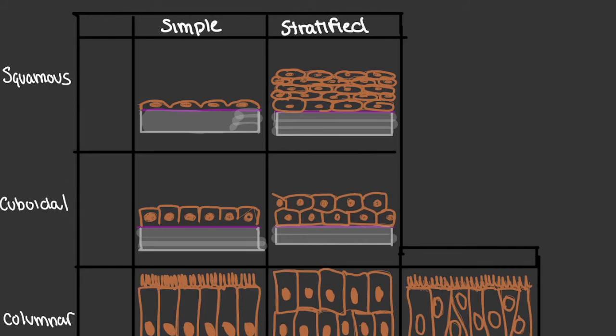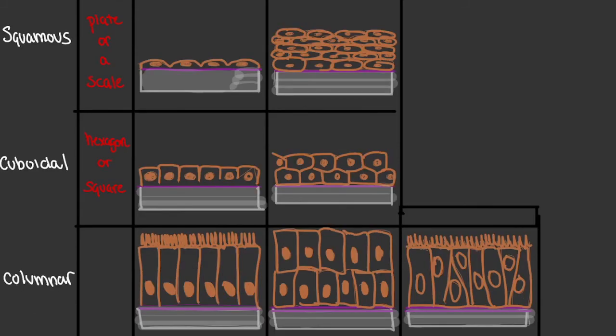When we see the word squamous, it simply refers to something that resembles a plate or scale — it's very small, very thin, and very flat. Our next category is cuboidal, which means that our epithelia represent hexagons or squares in appearance. And then columnar, almost as the name implies, represents tall, very slender cells.